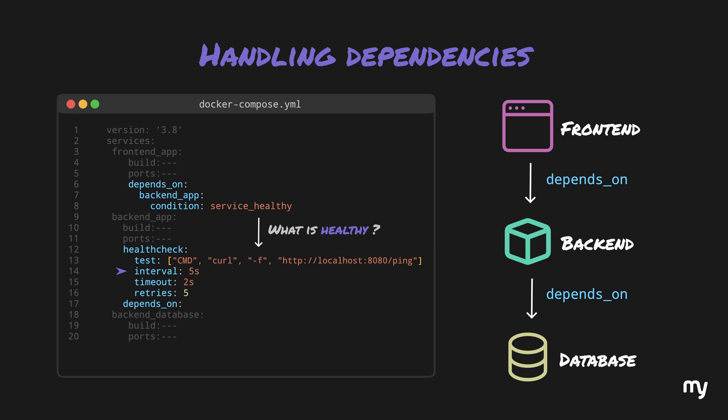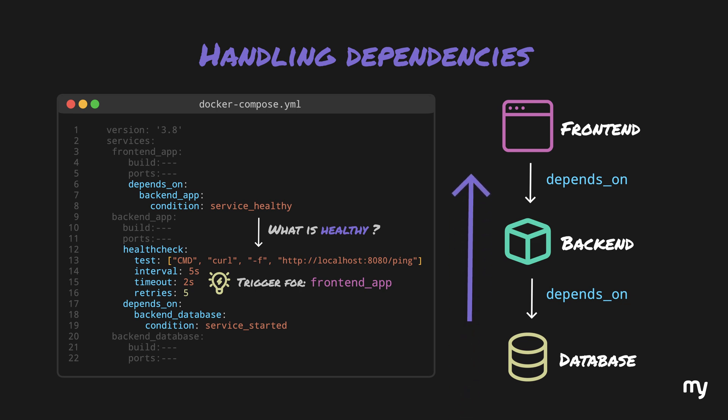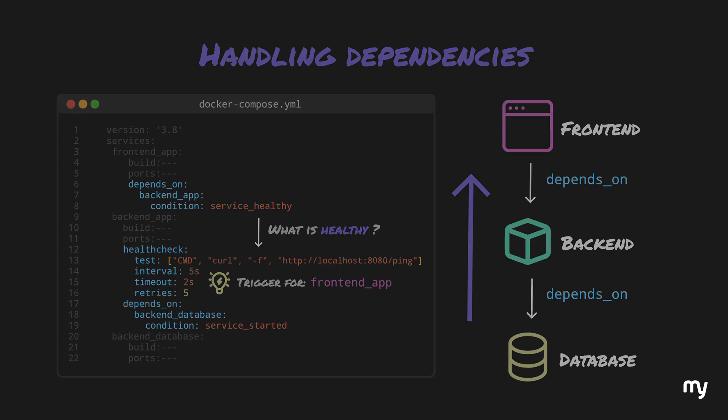When the backend's health check passes, it is marked healthy, which triggers the frontend to start. Similarly, the backend specifies that it depends on backend_database with a condition that the service should be started. With these definitions, Docker knows which dependencies to start first, ensuring the database comes up first, then the backend, and finally the frontend.